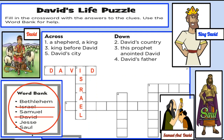Now, since we have the E, let's take a look at five across. Five across has nine letters and also has an E as the second letter. Let's take a look at our word bank. Who can guess what is five across, which is David's city? Did you guess Bethlehem? You're correct. Let's cross it out.